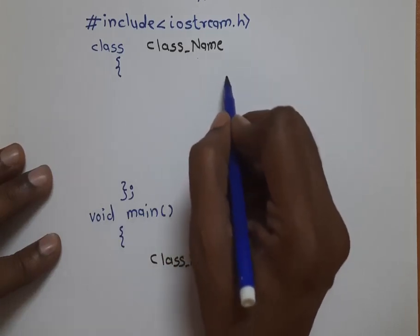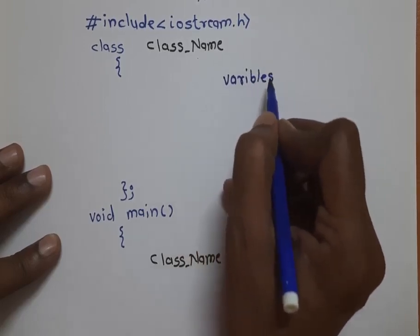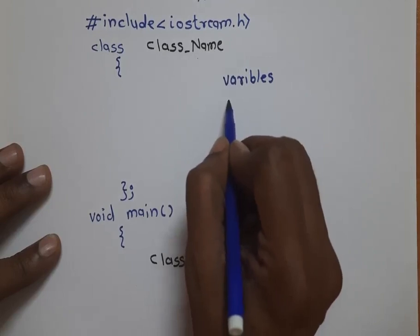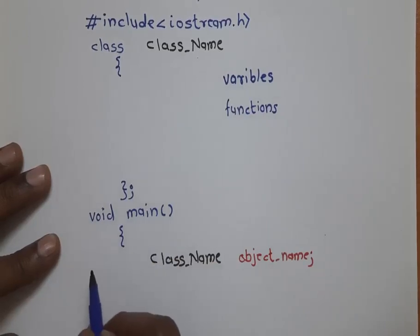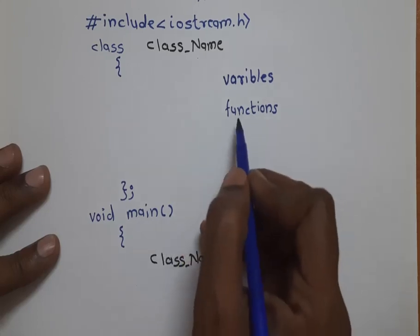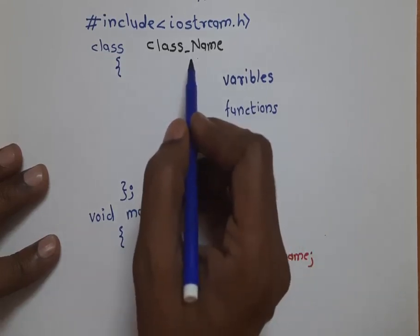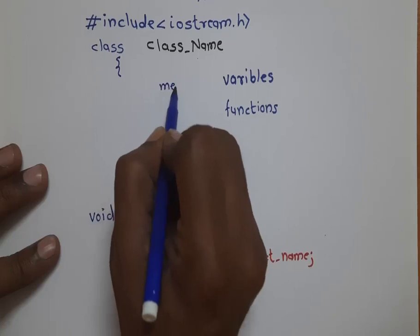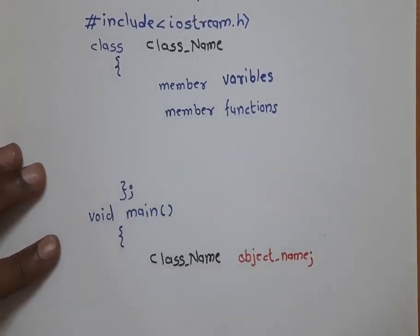Inside the class we can declare variables just like in C programming, and we can write functions to operate on these variables — to read a value, do some calculation, or display a value. Whatever programs you write go into the functions. These variables and functions are present within a class, so we call them member variables and member functions. Your class consists of member variables and member functions.